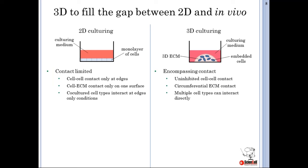Both cell-cell and cell-ECM contact is limited to singular surfaces in 2D cultures, and co-cultured cells can only interact indirectly through factors released into the culturing medium. In contrast, cells experience uninhibited cell-cell and cell-ECM contact in 3D cultures, forming multicellular structures that have been shown to have different gene expression patterns and cell signaling activities from their 2D counterparts. Co-cultured cells can even interact directly, sharing a basement membrane, as endothelial cells and pericytes have been shown to do.